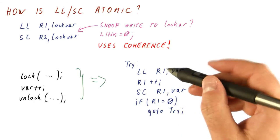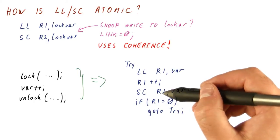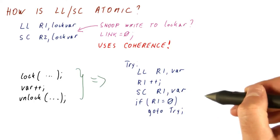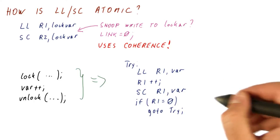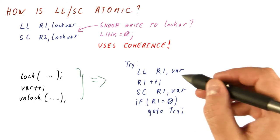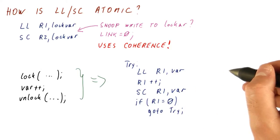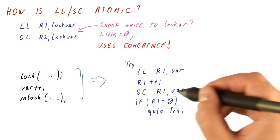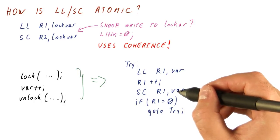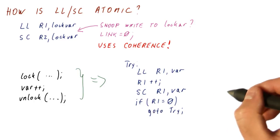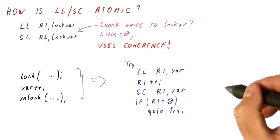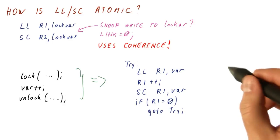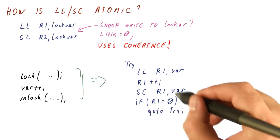So eventually we will succeed in this. We will load, and we will manage to store before somebody else beats us to it. So if another thread is doing the exact same thing here, let's say we both load. Now both of us link to the variable. We both increment. We both store. Whoever does the first store will succeed. Whoever does the second store is going to fail because by that time, their link is broken by the first store.